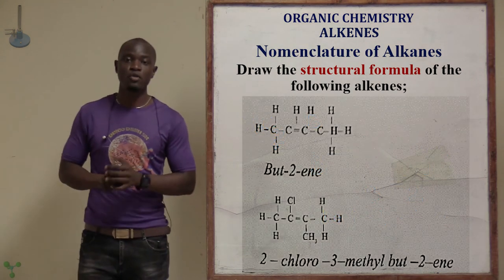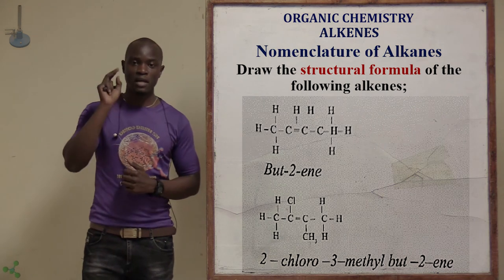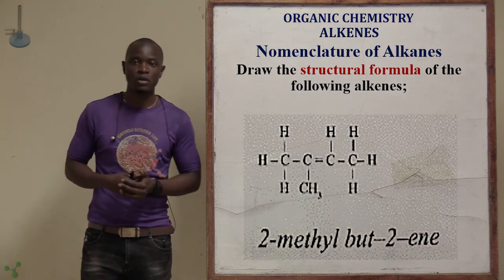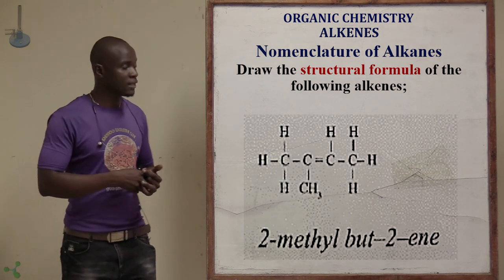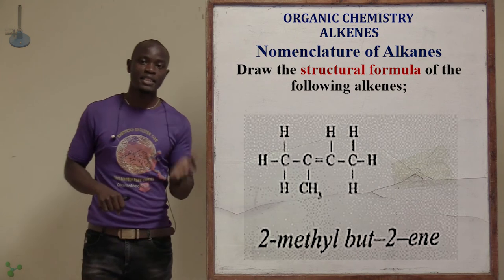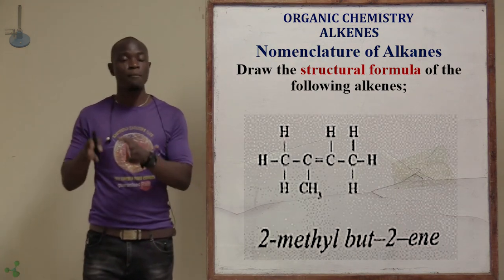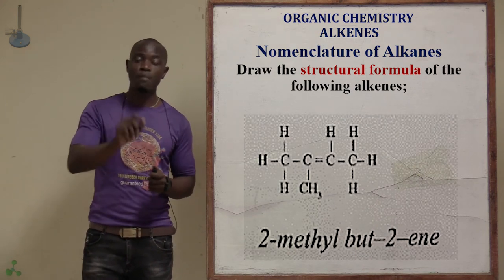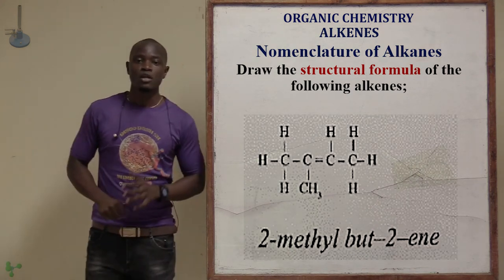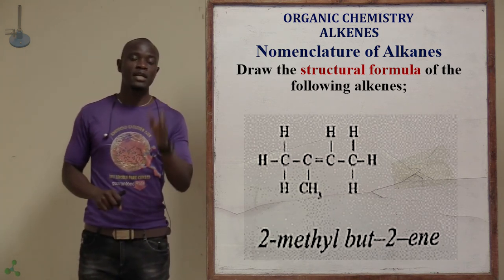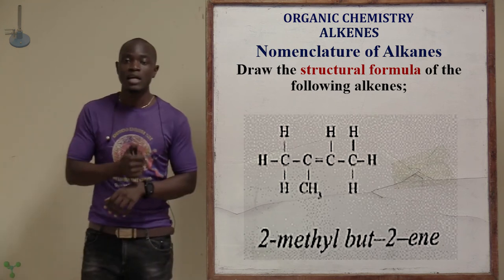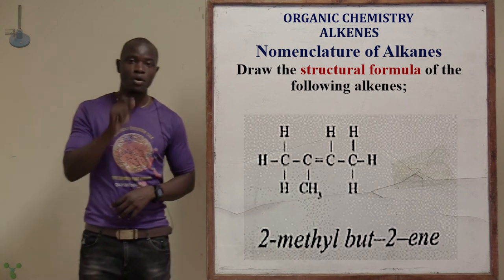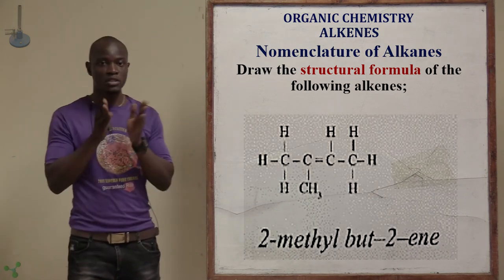For bute-2-ene, the double bond is after carbon 2. For 2-methylbut-2-ene, the methyl group is at carbon 2 and the double bond is also at carbon 2. For 2-chloro-3-methylbut-2-ene, chlorine is at carbon 2, the methyl group is at carbon 3, and the double bond is at carbon 2.